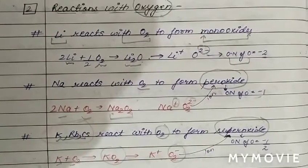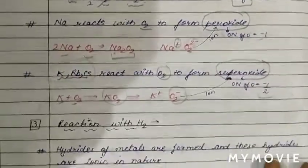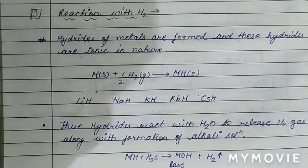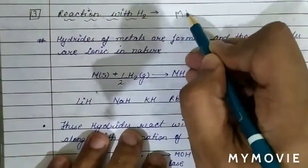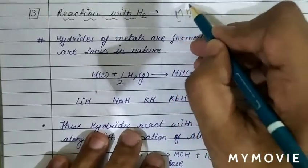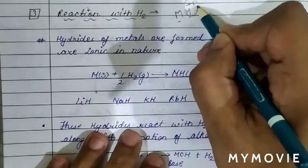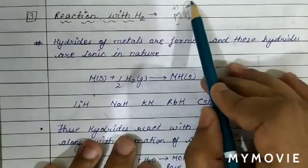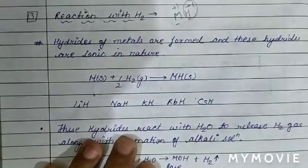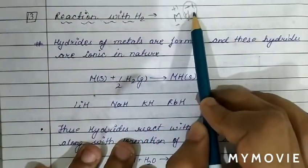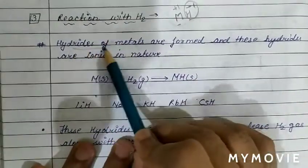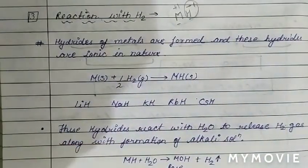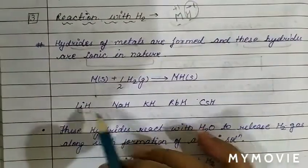The next chemical property is the reaction of alkali metals with hydrogen. Alkali metals react with hydrogen to form metal hydrides (MH). When hydrogen combines with metal, the oxidation state of hydrogen is −1 (hydride, H⁻). These metal hydrides are ionic in nature.